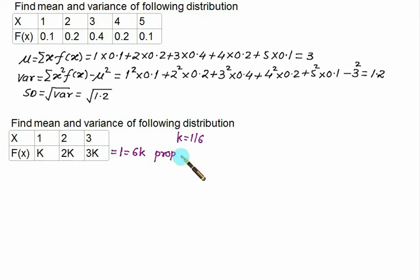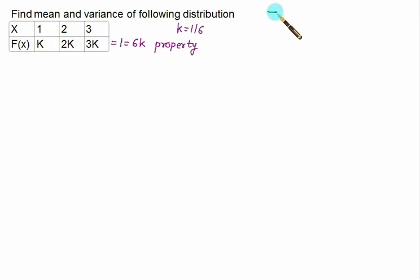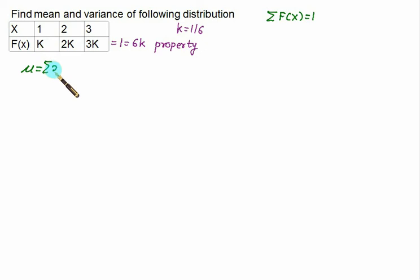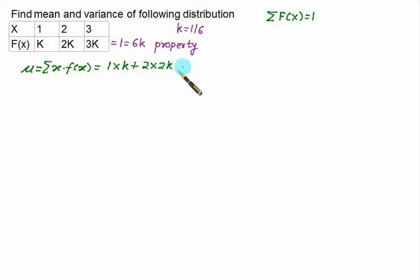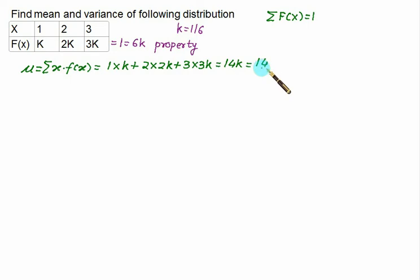The sum of P(x), or summation of f(x), is always equal to 1. Now to find the mean, we use mu equals summation of x into f(x). So this is 1 into k plus 2 into 2k plus 3 into 3k, which gives us 14k. Substituting k equals 1 by 6, we get 14 divided by 6, which is 7 by 3. So the mean value is 7 by 3.